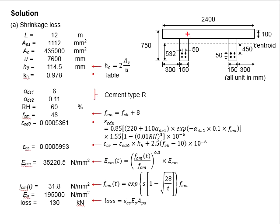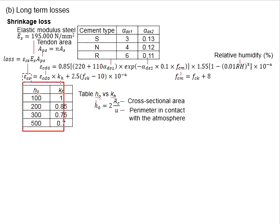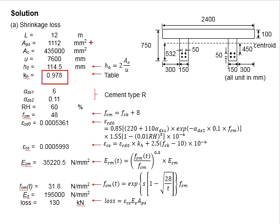And you need to use 650 plus 650 plus 250 plus 650. It is basically the perimeter of the section exposed to the environment. With the value acquired, you are able to determine the h_0, which is equal to 114.5 mm. Refer to the table, which is this, and do the interpolation. The k_h is found to be equal to 0.978.